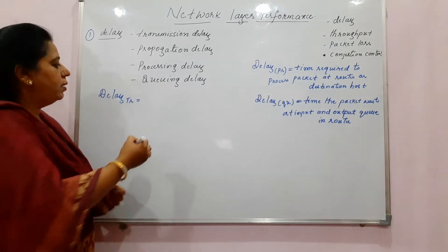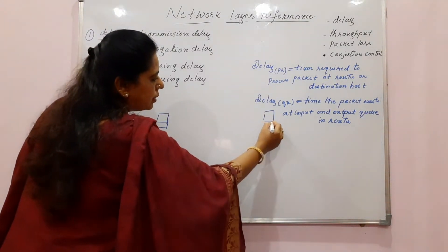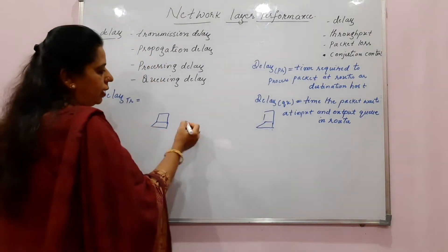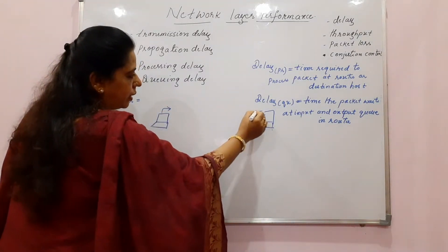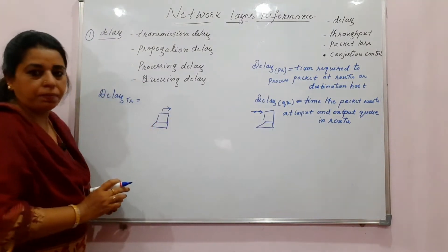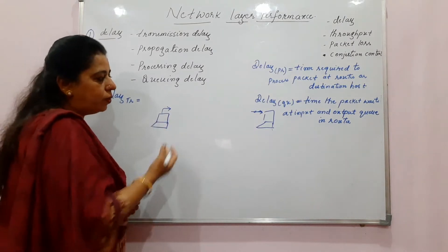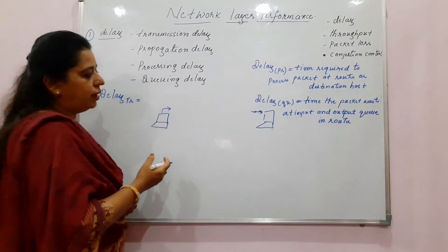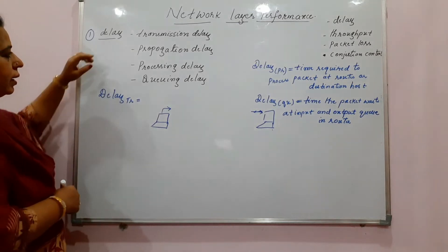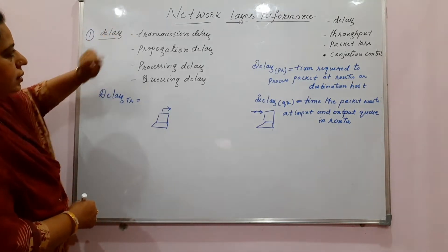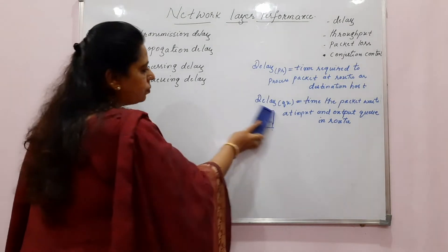Now coming to delay, the very first factor — delay is the time. Normally in a network, we have a sender and a receiver, and we don't want any delay in the packet getting transmitted from the sender and received at the receiver. But since there are different components in a network, each with its own properties, there will be delay. The different delays are transmission delay, propagation delay, processing delay, and queuing delay.